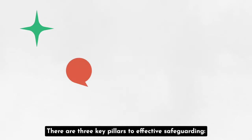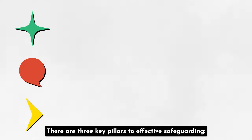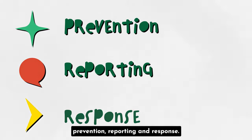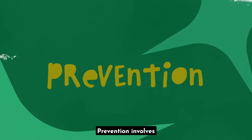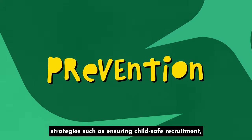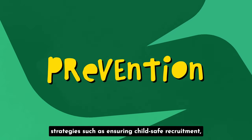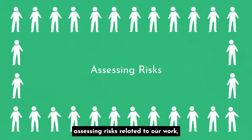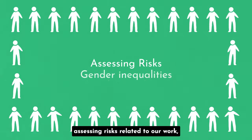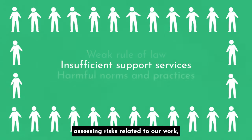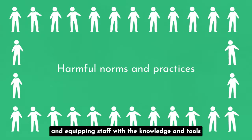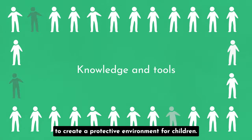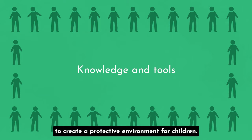There are three key pillars to effective safeguarding: prevention, reporting, and response. Prevention involves strategies such as ensuring child-safe recruitment, assessing risks related to our work, and equipping staff with the knowledge and tools to create a protective environment for children.